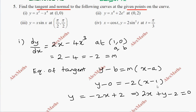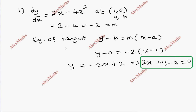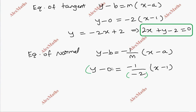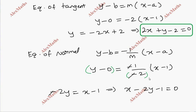Usually arrange the answer with x term, y term, and constant term in the same order. For the slope of normal, equation of normal formula: y minus b equal to minus 1 by m into x minus a. So y minus 0 equal to minus 1 by minus 2 into x minus 1. Multiplying through, minus 2y equals x minus 1. This is the equation of normal.